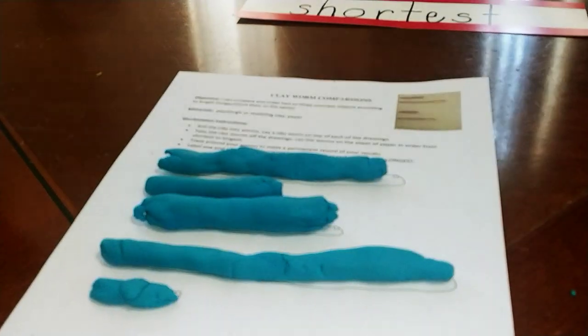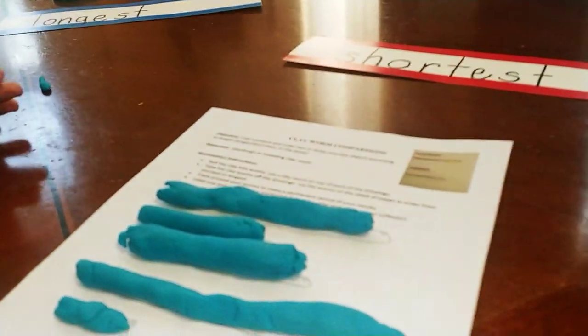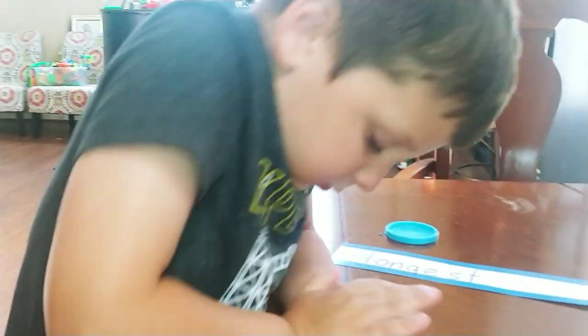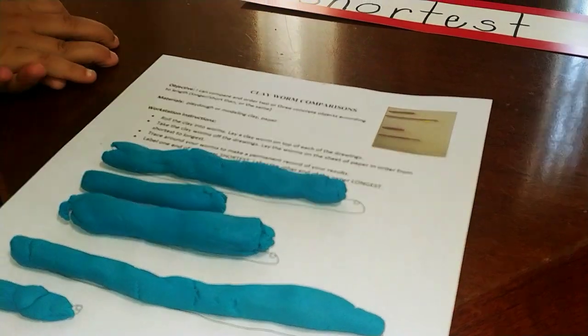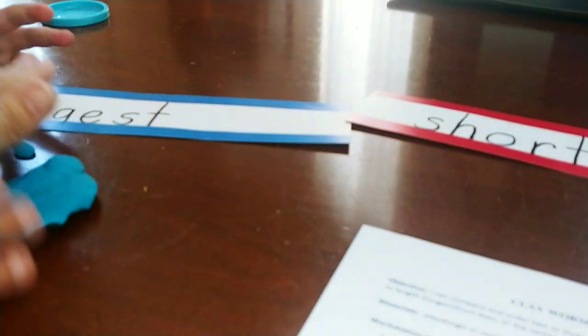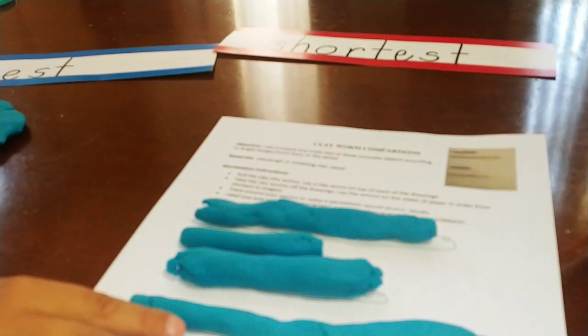What we're doing is rolling out worms to different lengths using play-doh. Knox is all done getting his worms ready. He's laid them out and now we're gonna compare them. I've got two word strips for you: longest and shortest. Can you grab your worms?